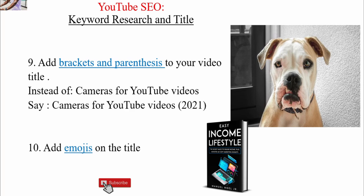Finally, point number ten: add emojis to your title if possible. Add emojis to give it that natural oomph, add some flavor and vibe to your title, and make your title stand out from the crowd. So those are the top 10 keyword research and title tips under YouTube SEO. In the next video, we are going to go to thumbnails, description tags, and other things about YouTube SEO.